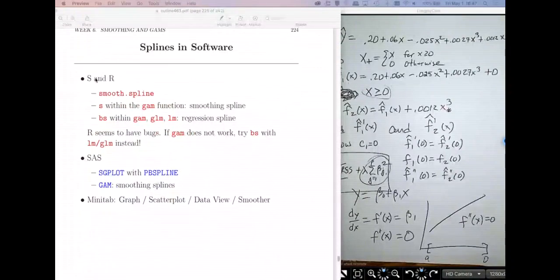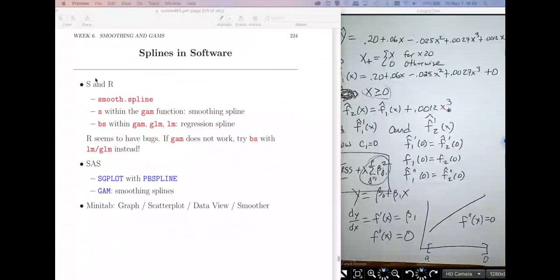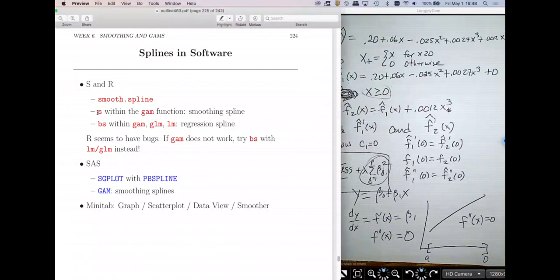There are other ways. So there's a function called the generalized additive model, which will be in my next video. In the generalized additive model, there is a function called S. It's not a function, actually. It's something that you can apply in a formula to add a smoother to your term.